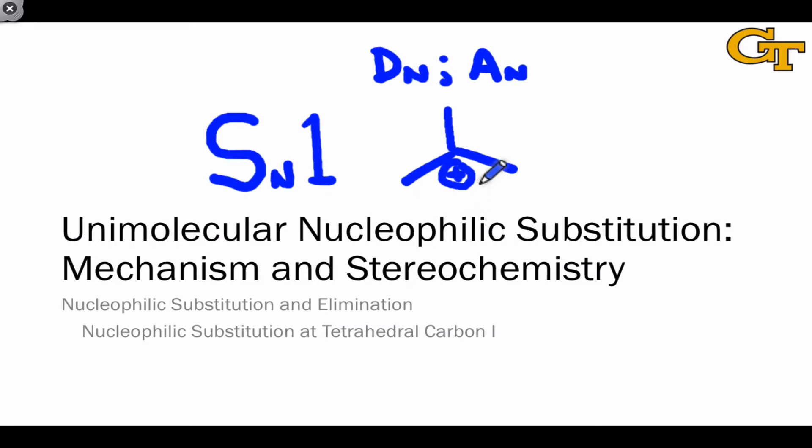In particular, we want to understand the stability properties of carbocations, what structural factors imbue them with stability, and we want to understand their stereochemical properties and how these give rise to, for example, enantiomeric or diastereomeric products in certain types of SN1 reactions.